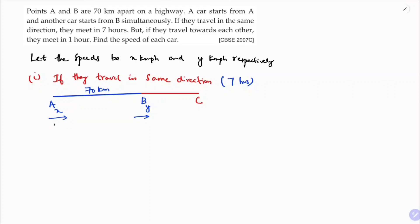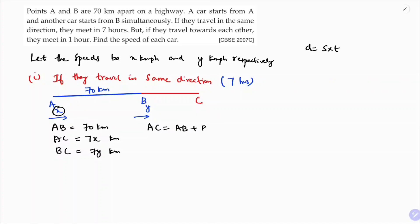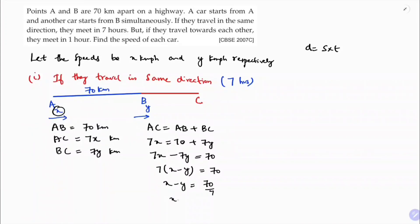A to B is 70 km. Distance AC equals speed into time, so AC is 7x km, and BC is 7y km. From the diagram, AC equals AB plus BC, so 7x equals 70 plus 7y. Transferring 7y to the left: 7x minus 7y equals 70. Taking 7 as common: x minus y equals 10. This is equation 1.